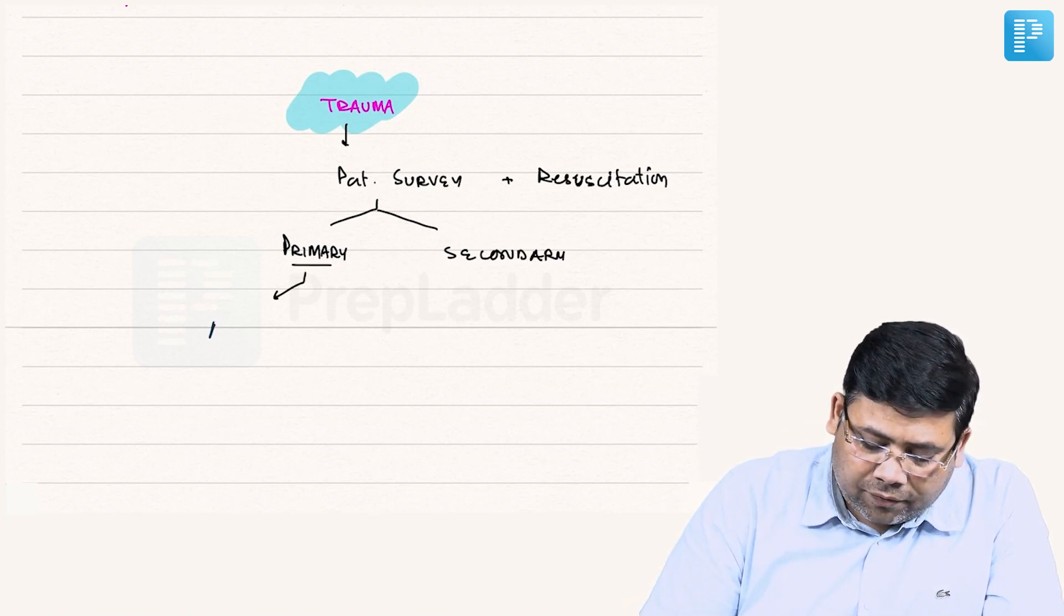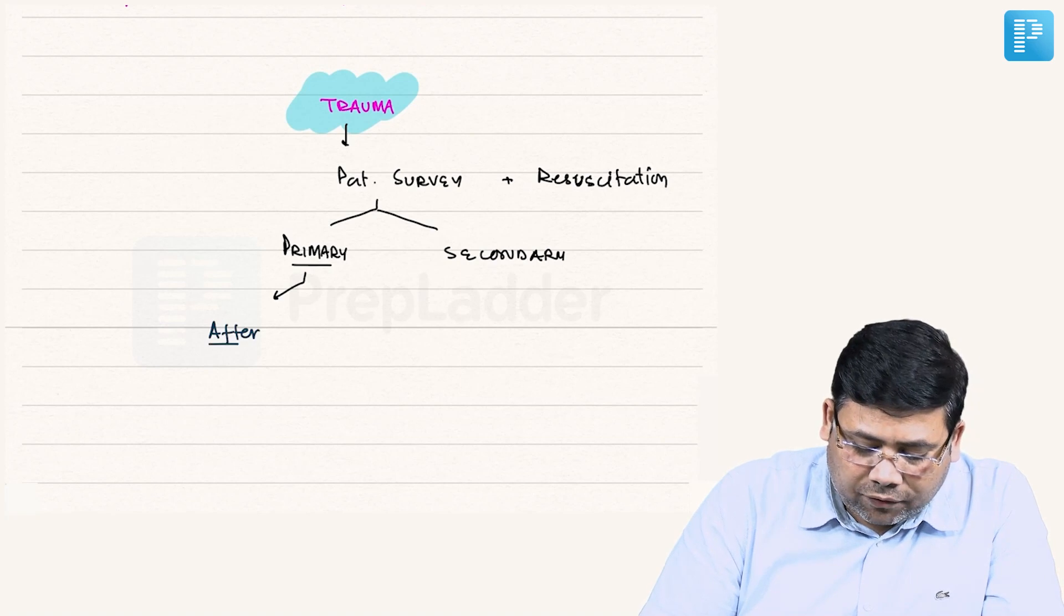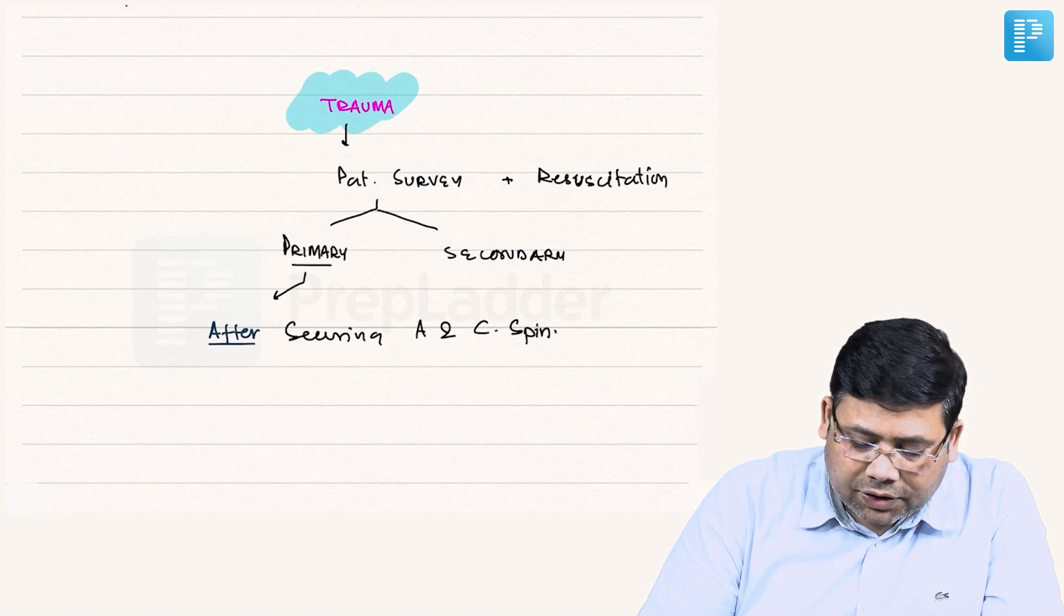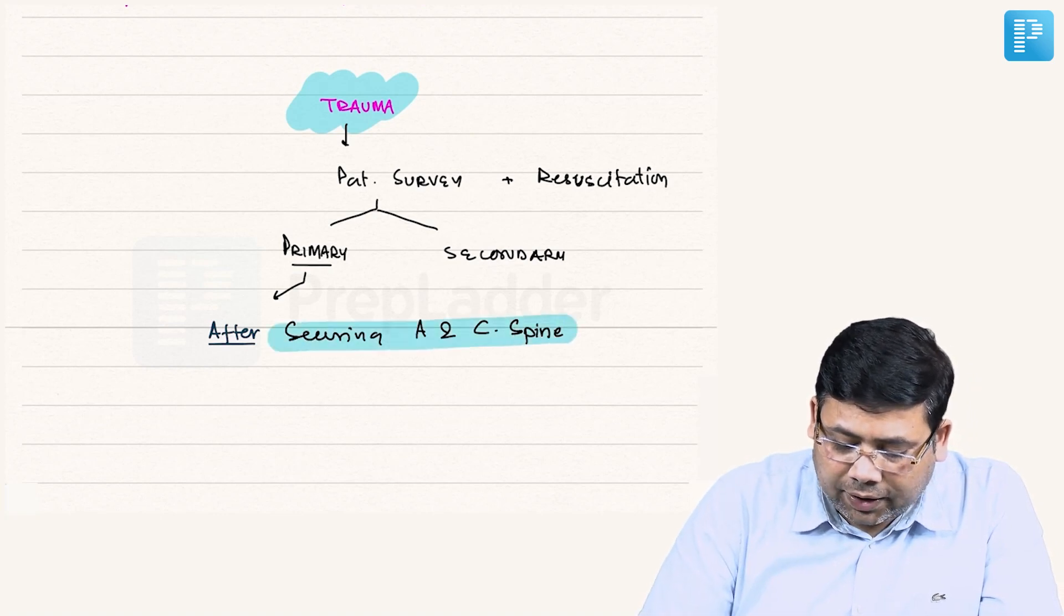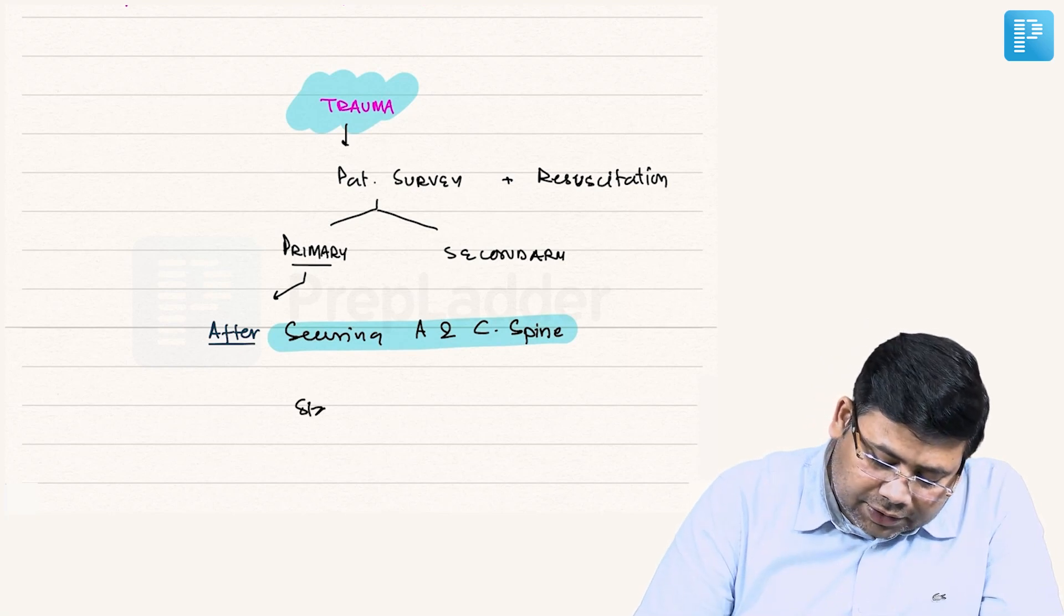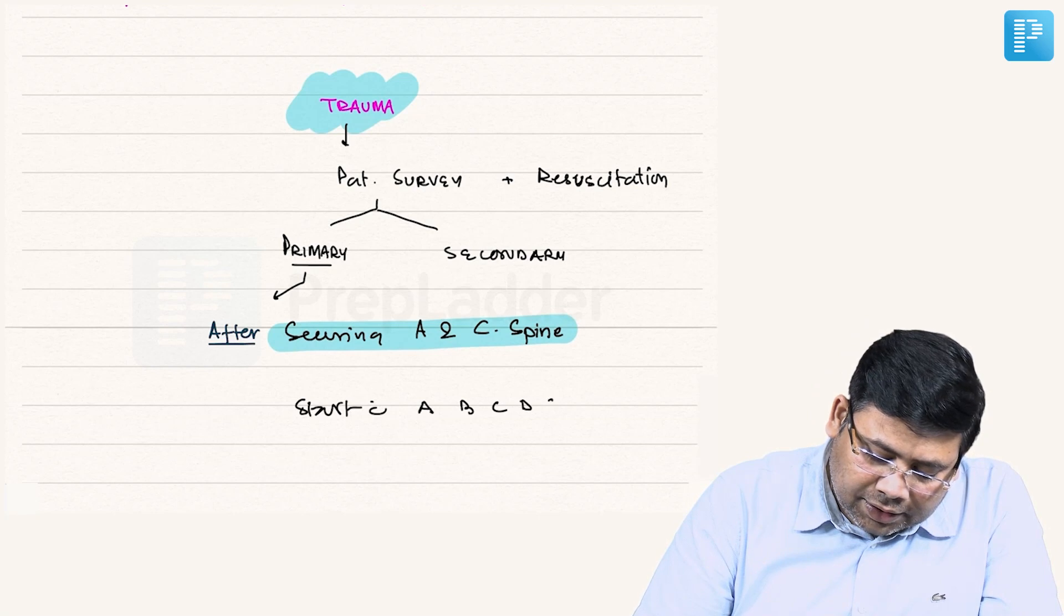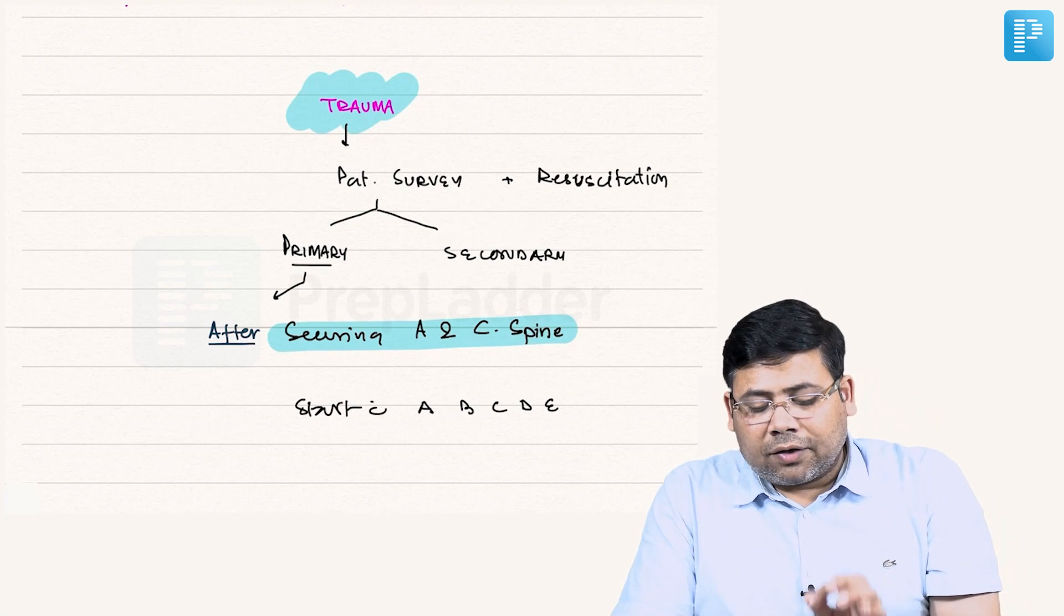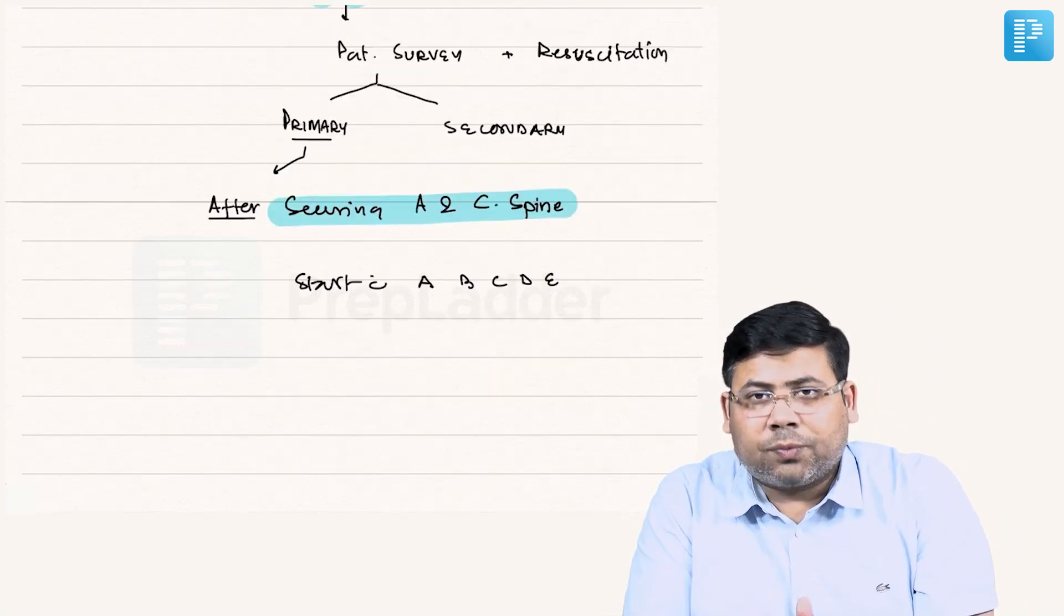According to this concept, after securing airway and cervical spine, we start with A, B, C, D, E. This is assessment of airway, breathing, circulation, disability, and exposure.